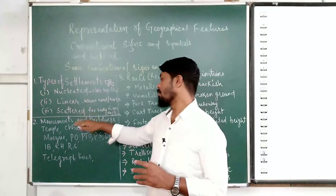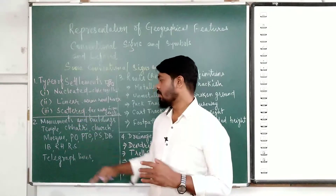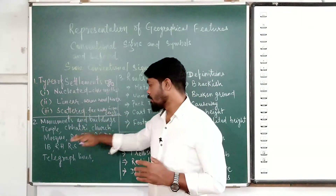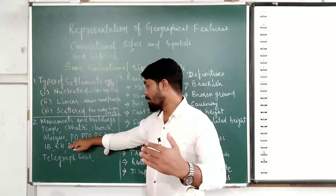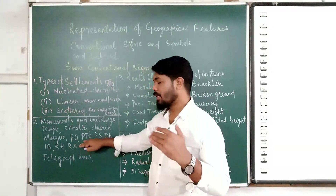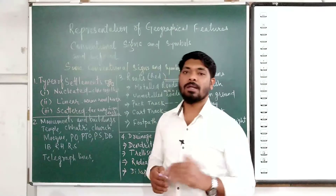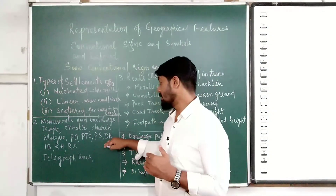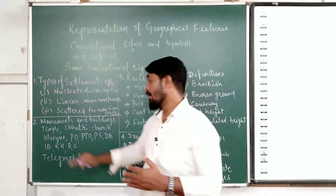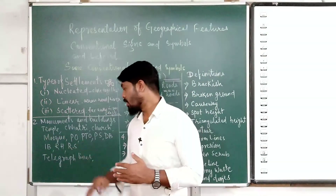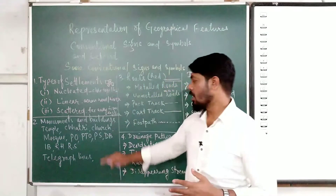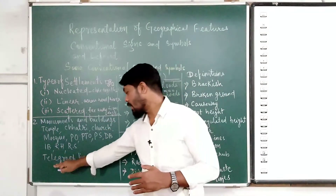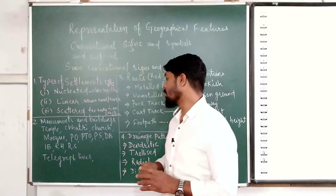Then we have monuments and buildings. Monuments and buildings like temples, churches, and mosques are shown with specific symbols. Post office is shown with 'PO' in capital letters. 'PTO' means post office and telegraph office combined. 'PS' means police station, 'DB' means dak bungalow, 'IB' means inspection bungalow, 'RH' means rest house, and 'RS' means railway station. Telegraph lines are shown with dotted black lines printed on the map.